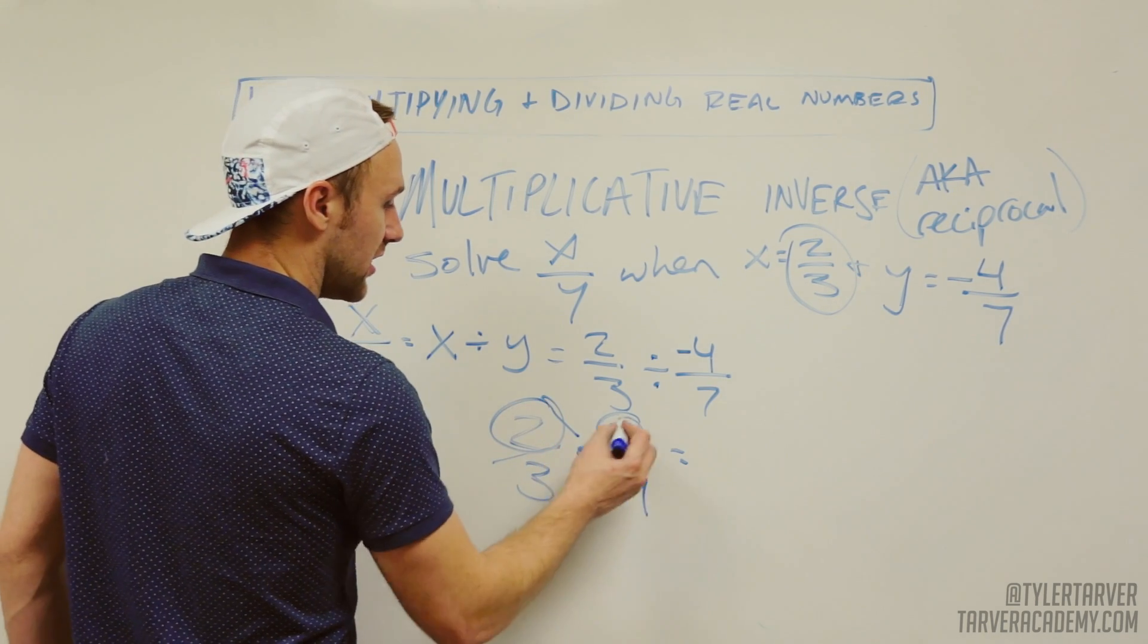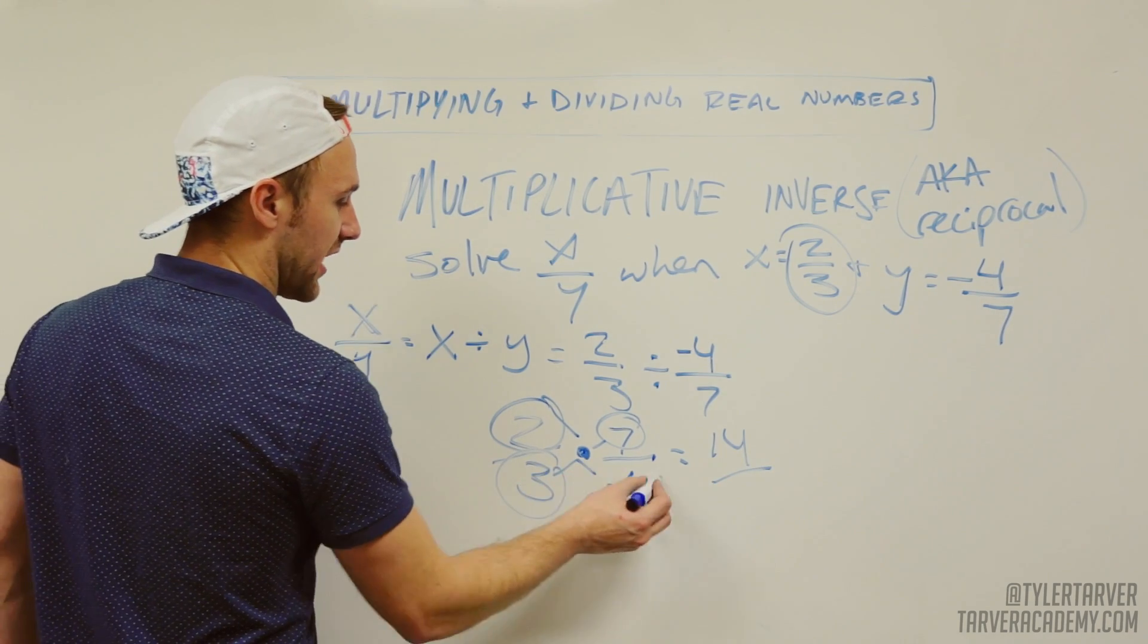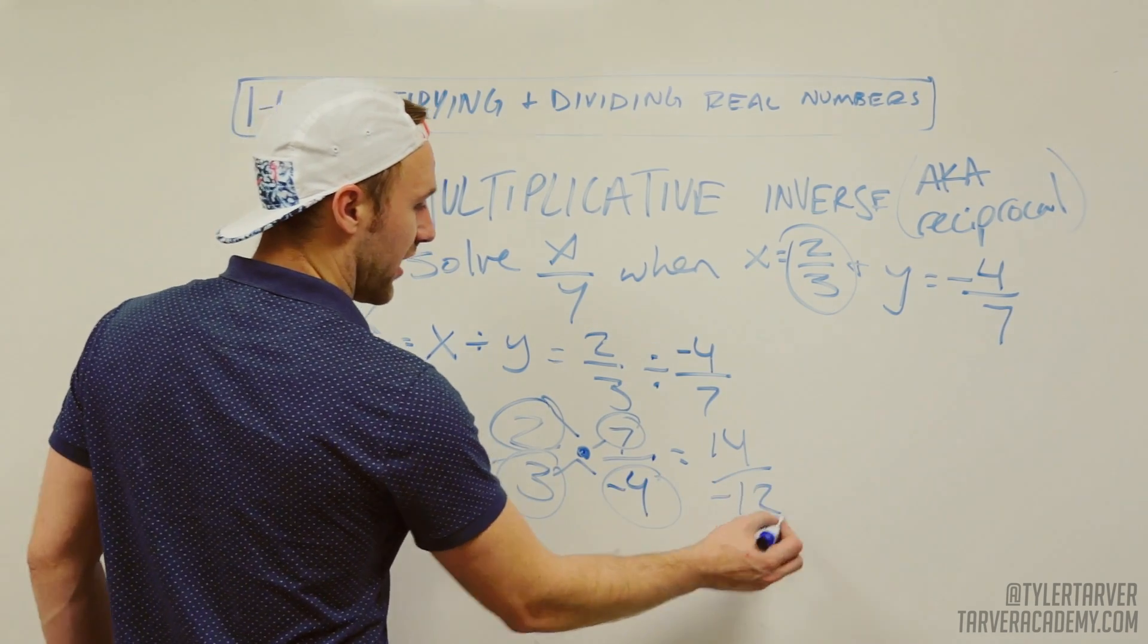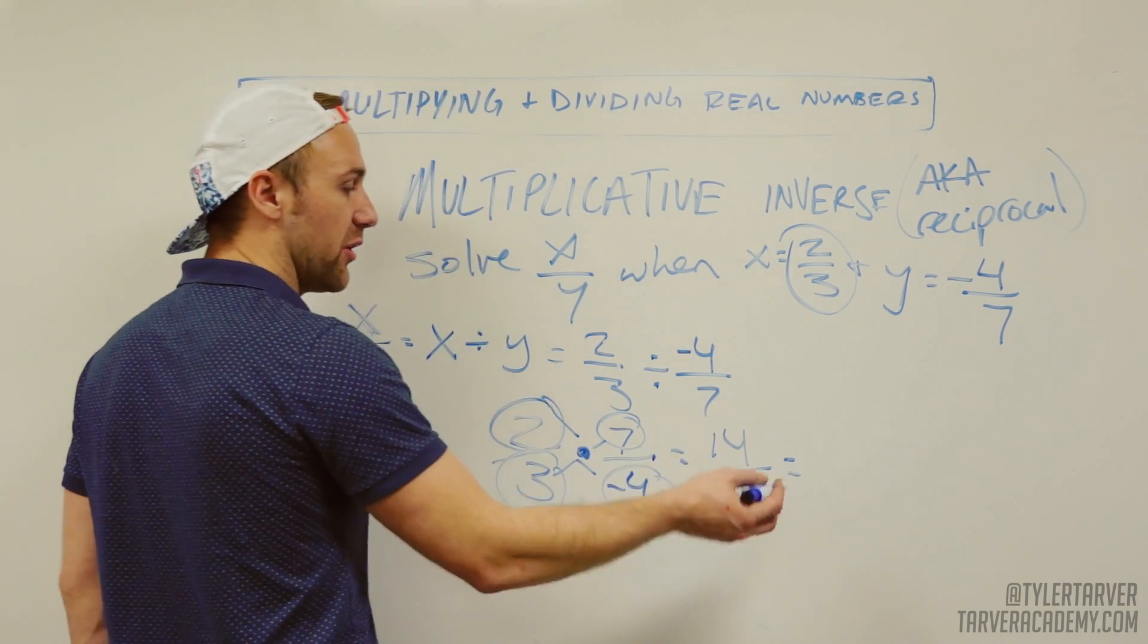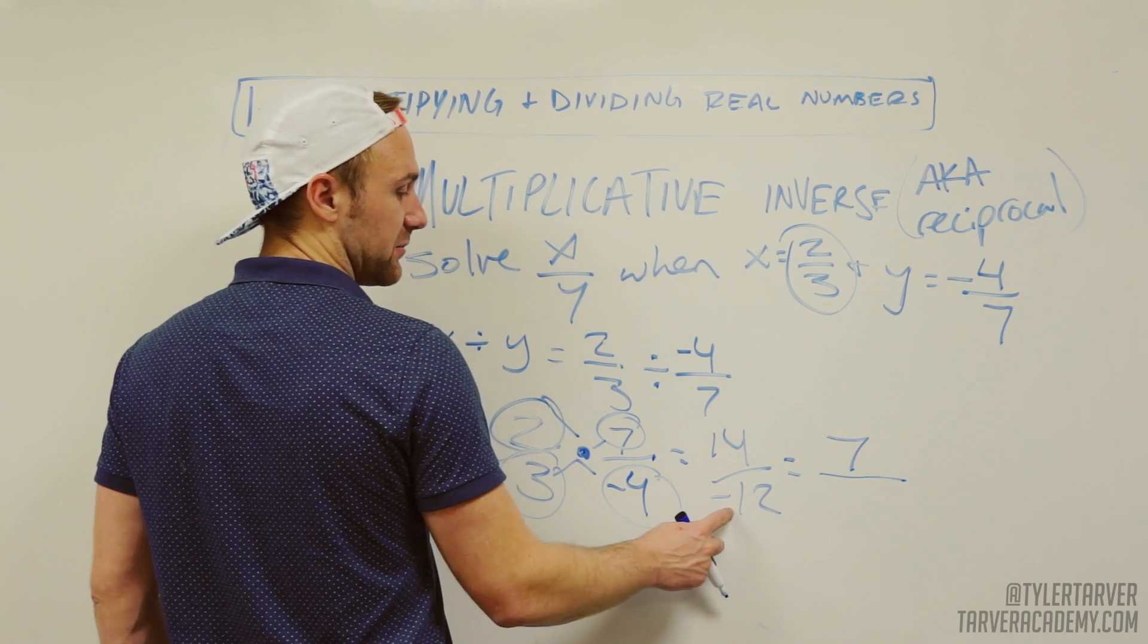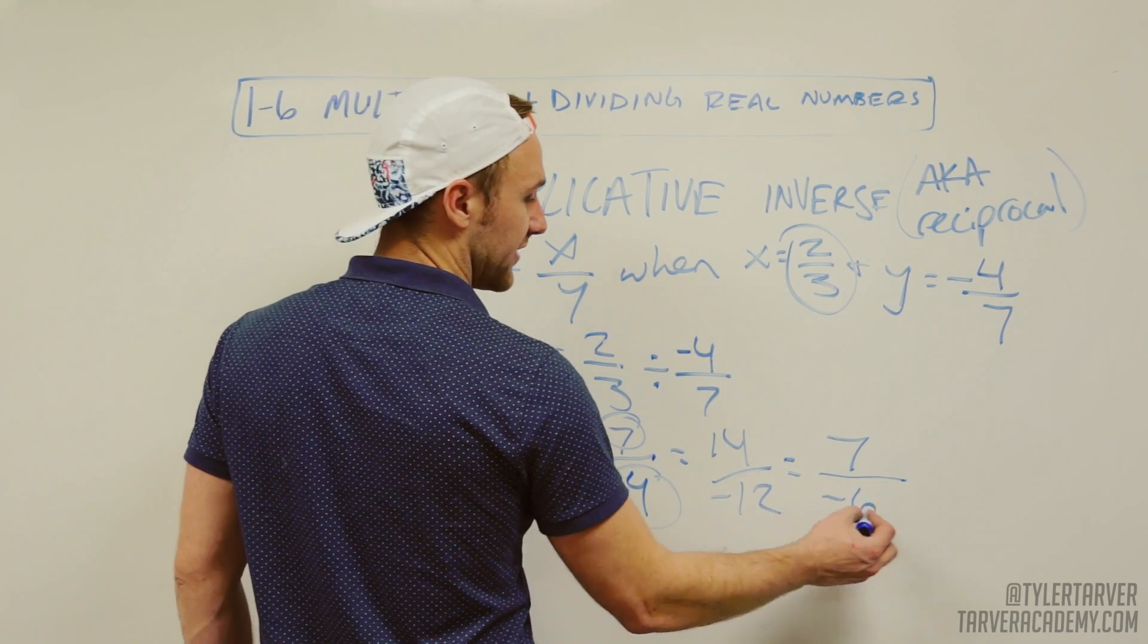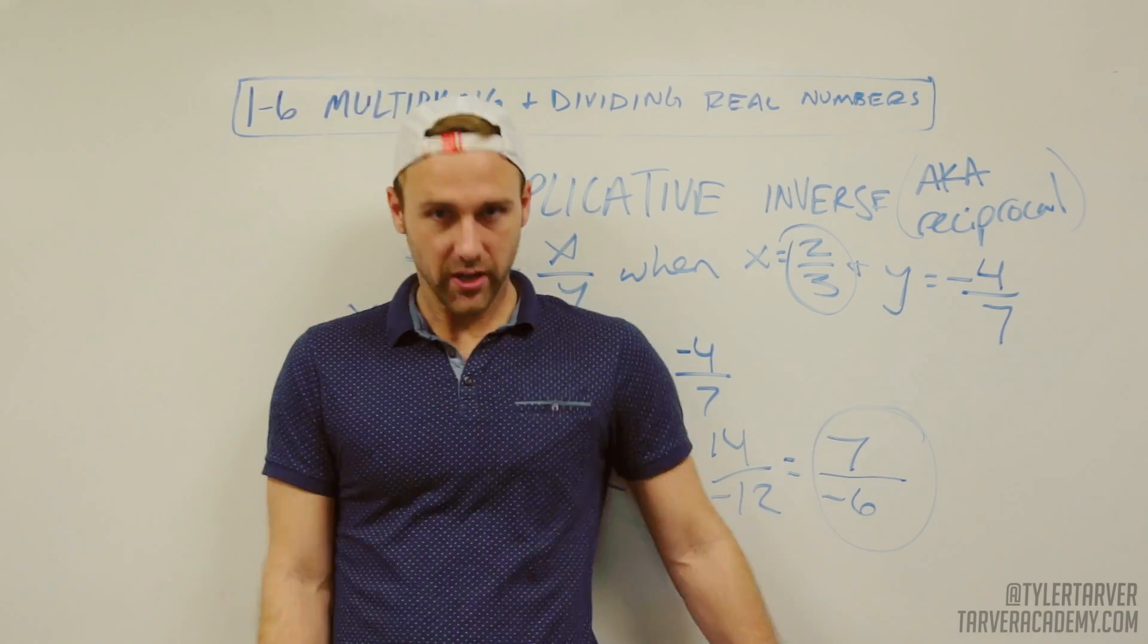Now we can just multiply across the top: 2 times 7 is 14. 3 times negative 4 is negative 12. Can I simplify that? Absolutely. They're both even. I know 2 goes into both of them. How many times does 2 go into 14? 7 times. How many times does 2 go into negative 12? Negative 6 times. We have our answer, ladies and gentlemen. And that's what learning looks like.